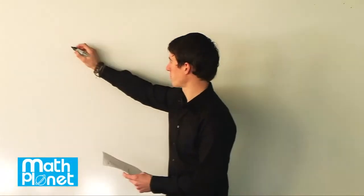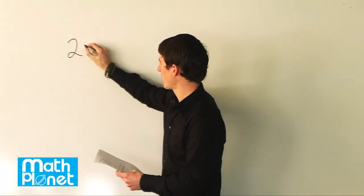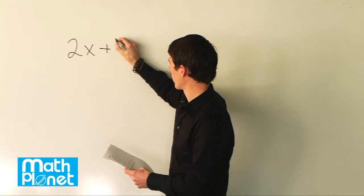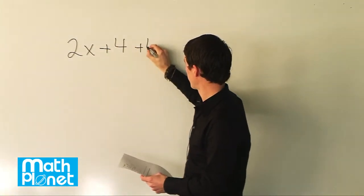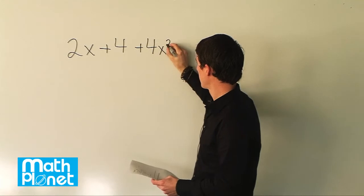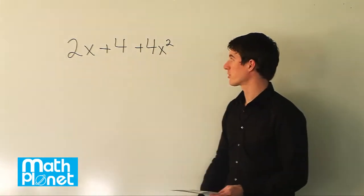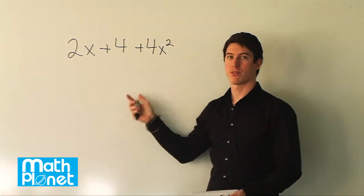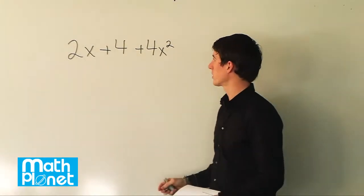We have this algebraic expression written as 2x plus 4 plus 4x squared. We want to simplify this as much as possible, or in this case what we want to do is factorize. So when we say simplify we mean factorize.